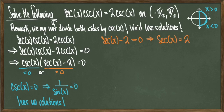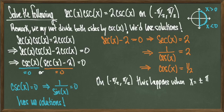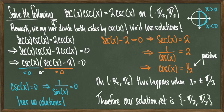Next we set secant x minus 2 equal to 0, meaning secant of x equals 2. Since secant is 1 over cosine, we're looking for values where cosine of x equals 1/2. Observing our interval restriction of negative pi over 2 to pi over 2 — the right half of the unit circle — the solutions are x equals plus or minus pi over 3. Evaluating cosine at plus or minus pi over 3 gives positive x-coordinates, confirming they lie in the right half. Therefore, the solution set is x equals negative pi over 3 and positive pi over 3.